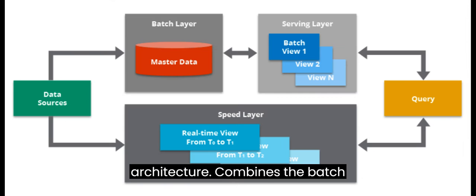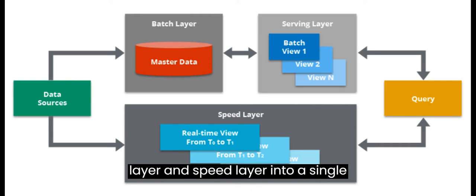Lambda architecture combines the batch layer and speed layer into a single architecture. It provides both batch and real-time processing capabilities, enabling consistent and accurate results for data analytics.